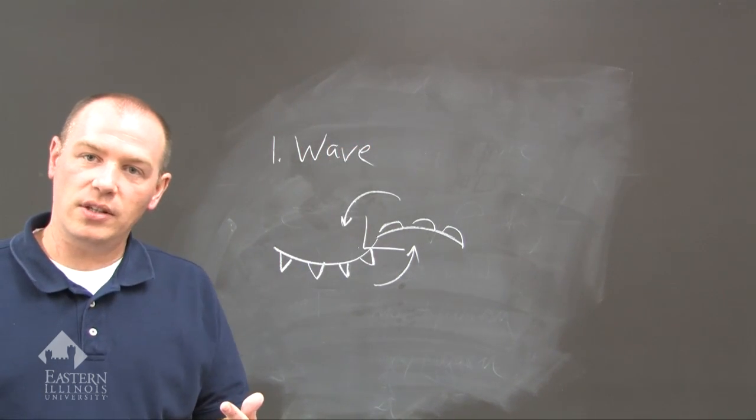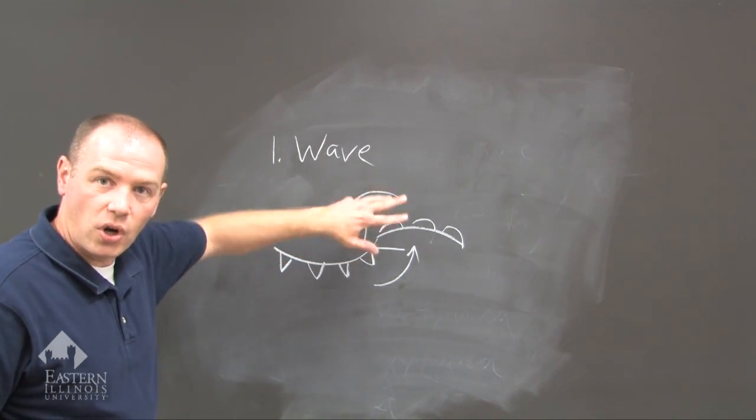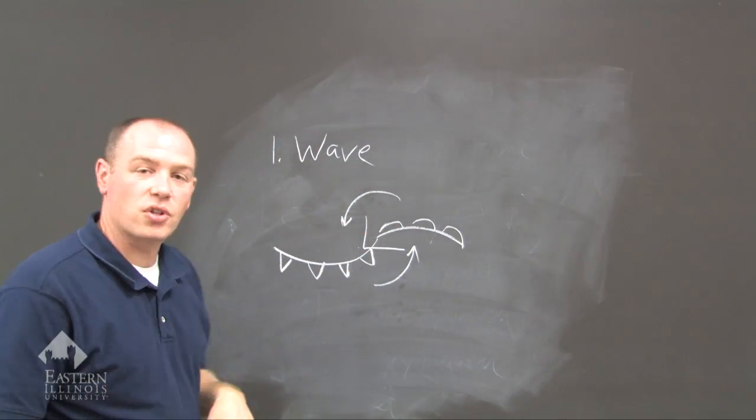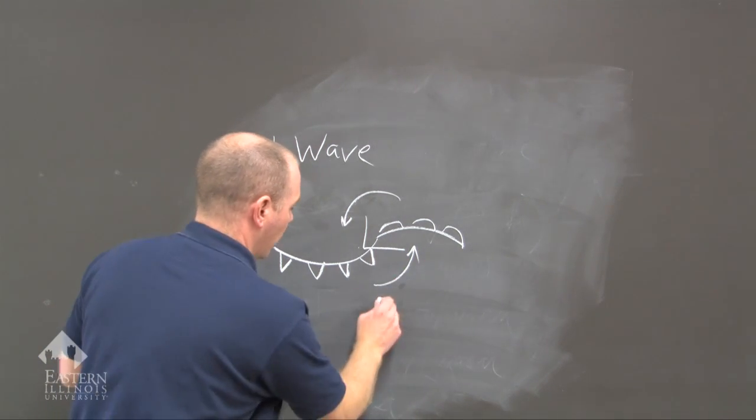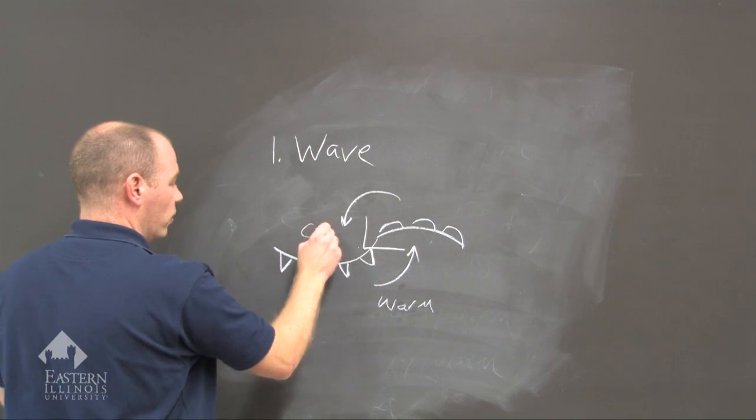Again, the first stage is the stationary stage. Then, when we insert the low pressure, which starts the spinning, we start to sort out the air masses. We get warm from the south and we get cold from the north.